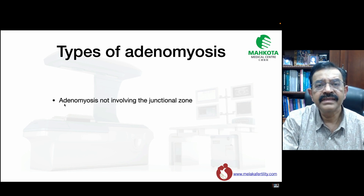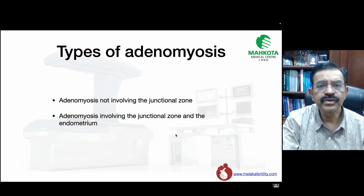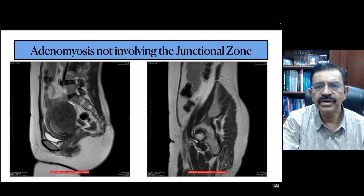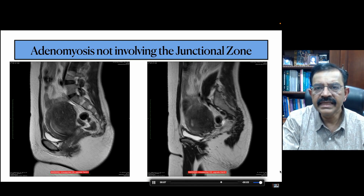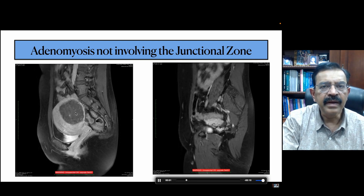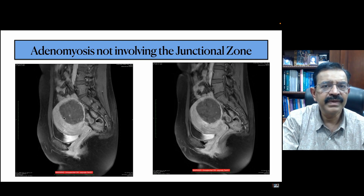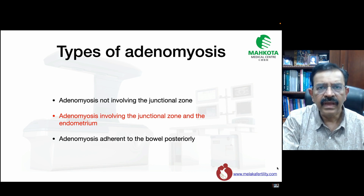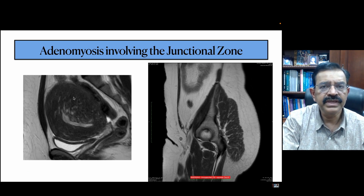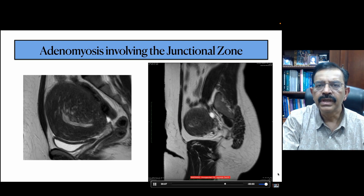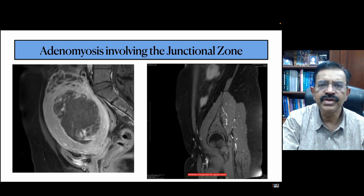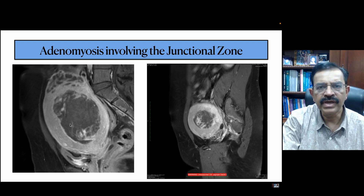Other types include adenomyosis not involving the junctional zone, adenomyosis involving the junctional zone, and adenomyosis adherent to the bowel posteriorly. When adenomyosis does not involve the junctional zone — where there is a gap between the adenomyosis and the endometrium — ablation is actually easier and will not reach the endometrial cavity. In contrast, when adenomyosis has already penetrated the junctional zone, there is a very high chance that ablation will reach the endometrial cavity and the endometrium will be affected.